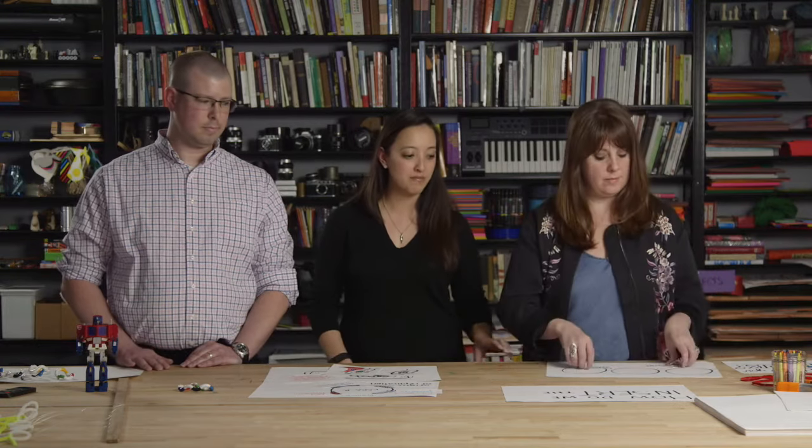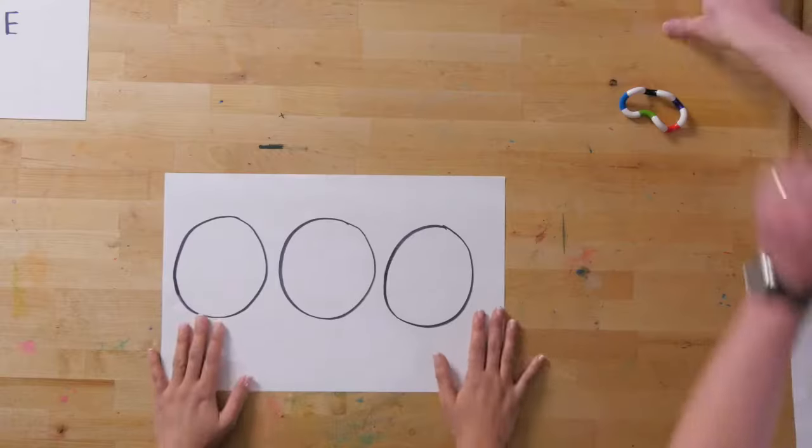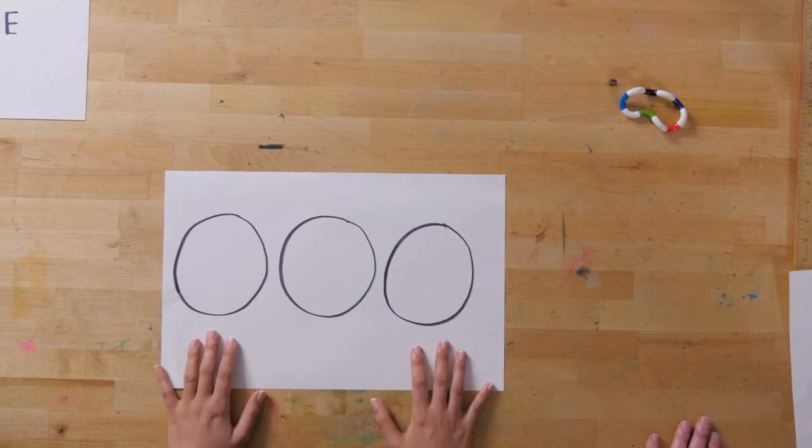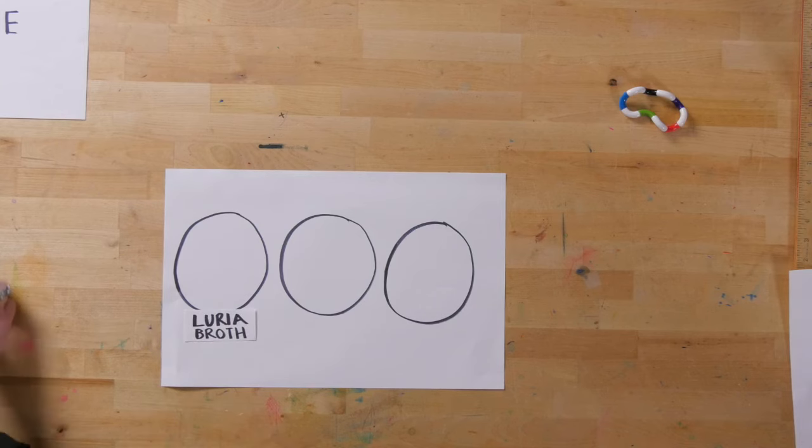These may just look like circles, but they represent plastic dishes called petri dishes that we can fill with different medium or food. Luria broth is bacteria's food of choice. This is like a big buffet for E. coli.